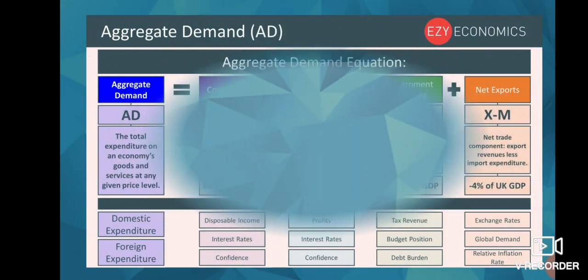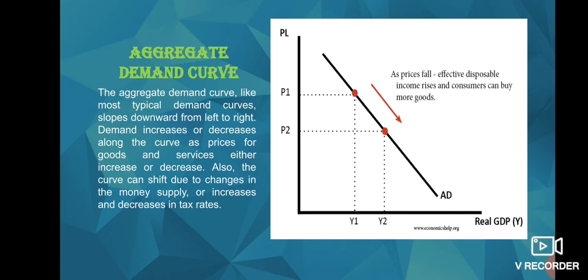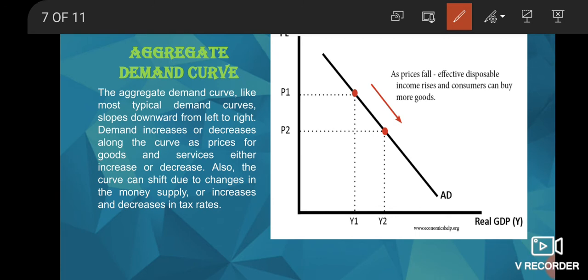Now coming to the next slide, there is an aggregate demand curve. Let us have a look at the aggregate demand curve. Here we have the price on one axis. In general, if price is higher, then demand is lower. On the contrary, if you reduce the price, then demand will automatically increase.